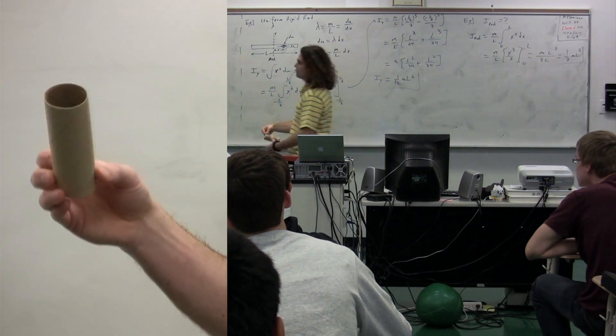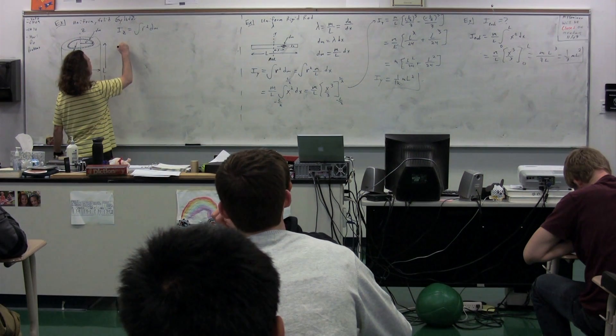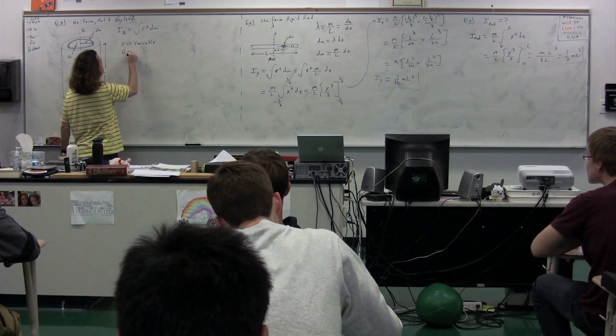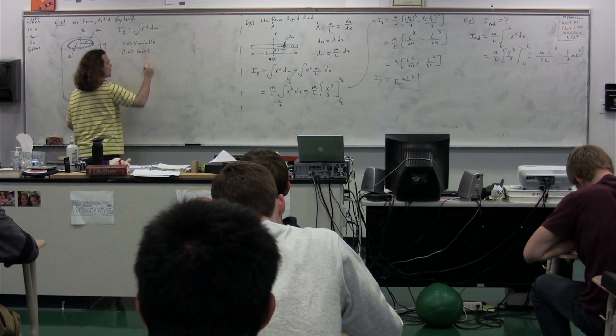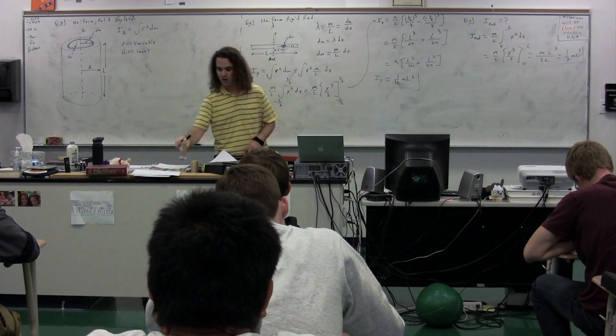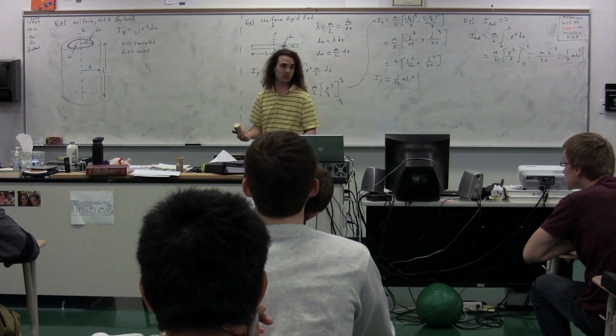Now, this is the first time I'm using the difference between a capital and a lowercase r. The lowercase r refers to the variable. The uppercase R refers to the constant. The constant is the radius of the cylinder, whereas little r refers to the radius of dm, which changes.